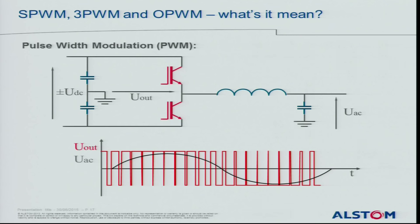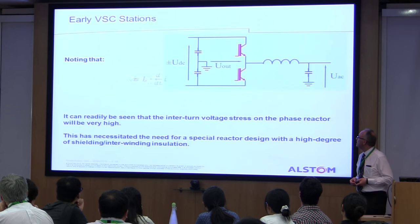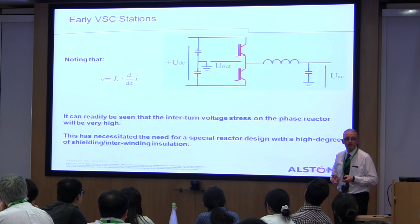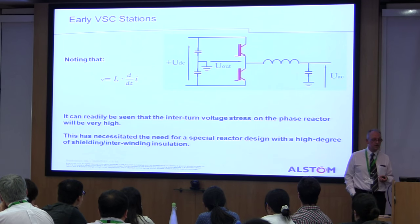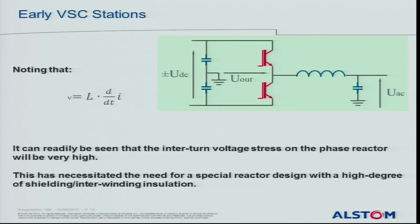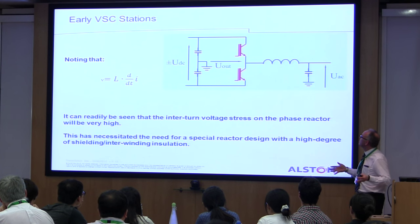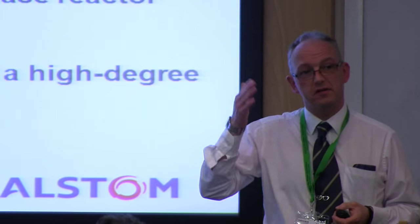PWM — that's a nice simple circuit, but in reality that power converter is smothered in filtering and reactors. That reactor in particular is a very special animal, because the inter-winding capacitance means the voltage stress on those windings is very high and it's a very difficult, bespoke reactor to build. If you look at one of these two-level converter stations, they're just great big tin boxes with shielding everywhere, because there is so much radiated interference from the switching of the converter.